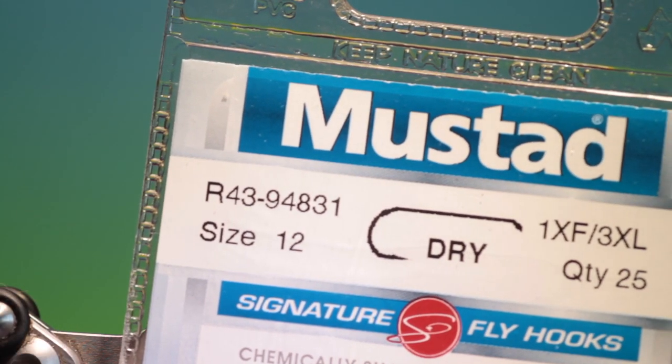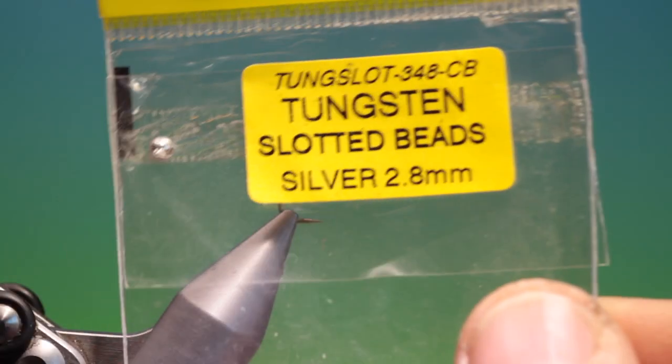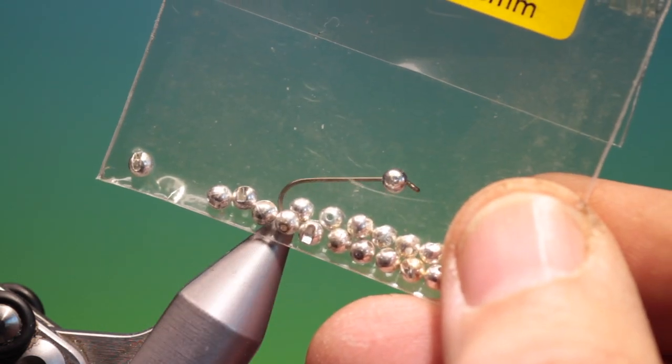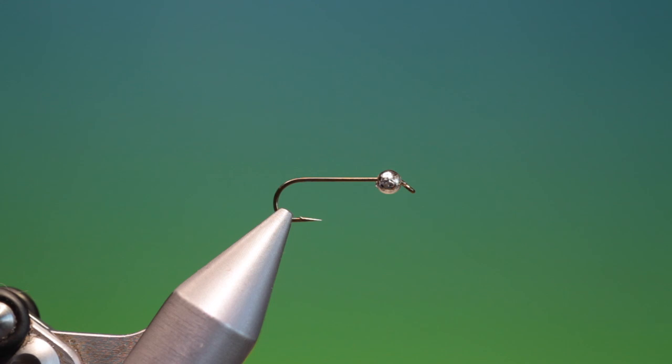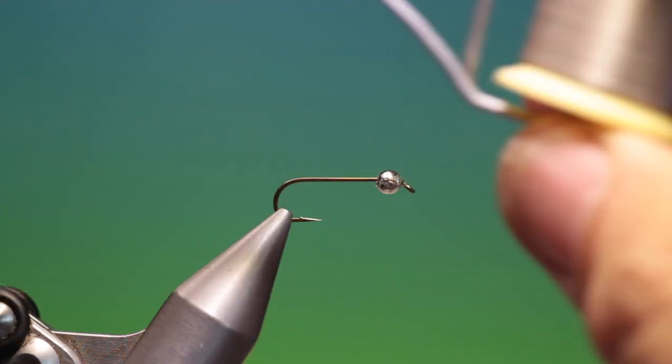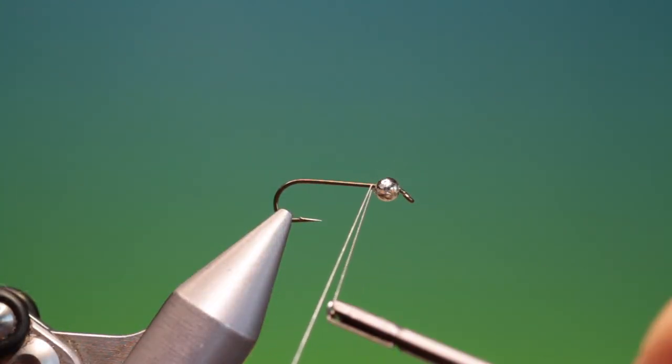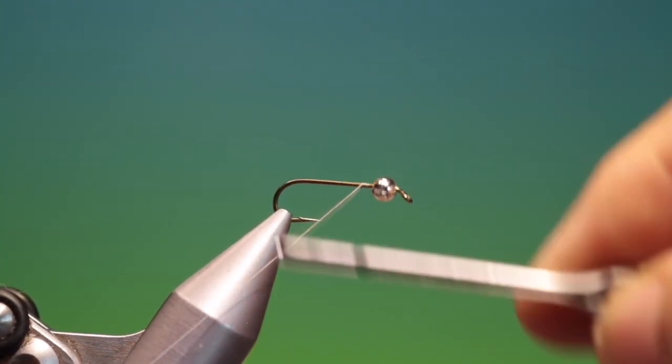We'll start with the Mustard R43 size 12. We've got a 2.8mm tungsten slotted silver bead. This is a three extra long hook for the diving caddis. We've got Shear 14-0 grey. We'll just apply a little bit of that.